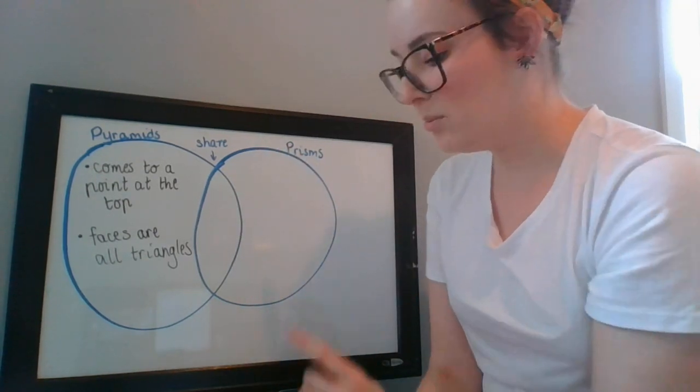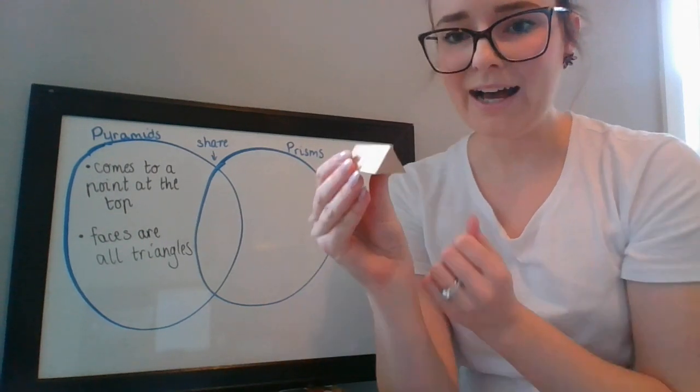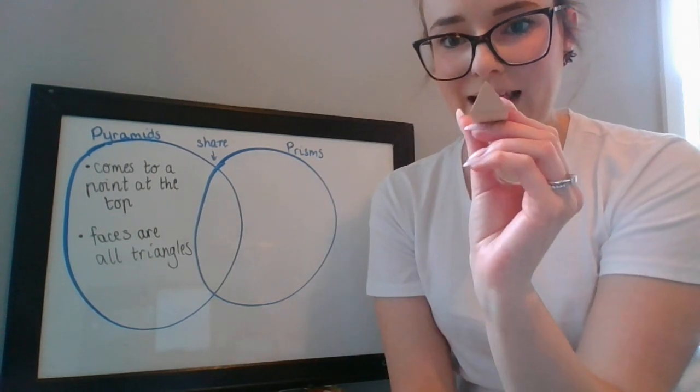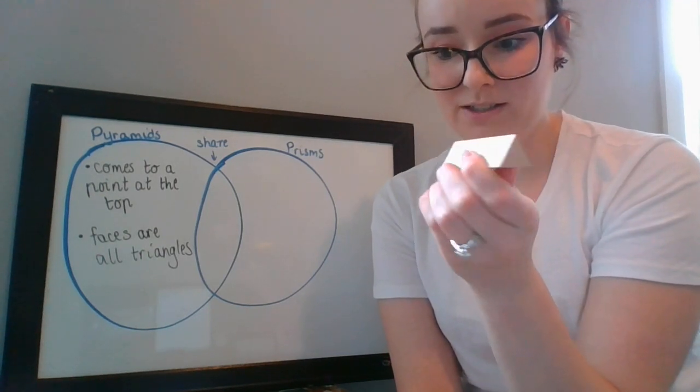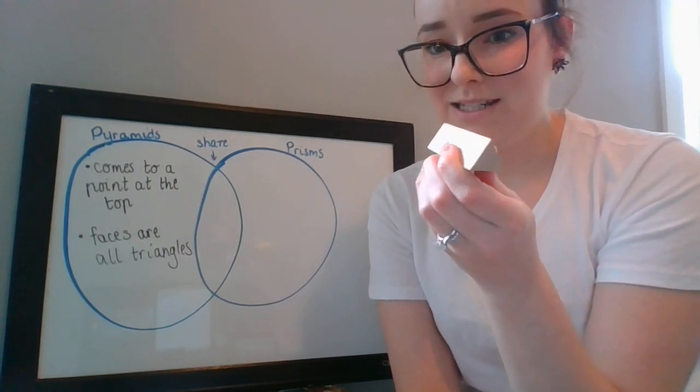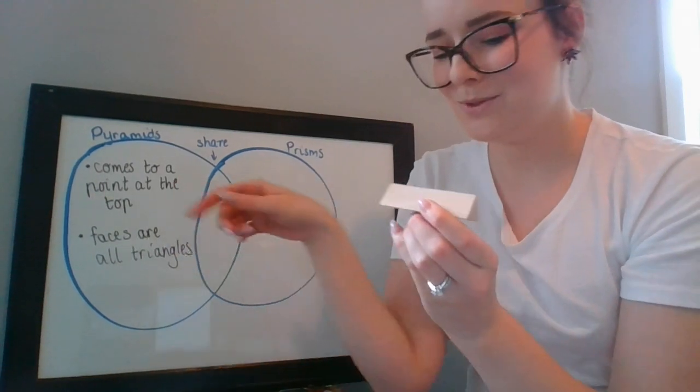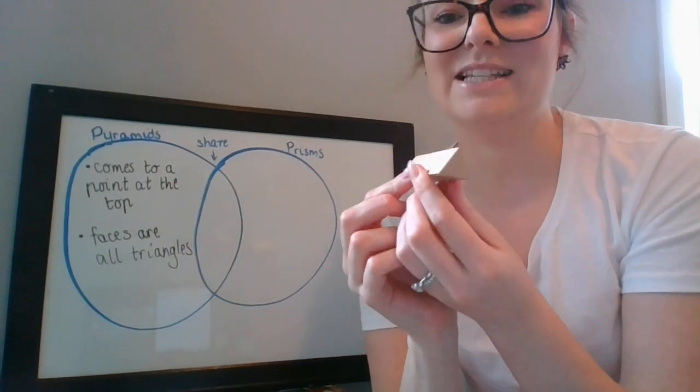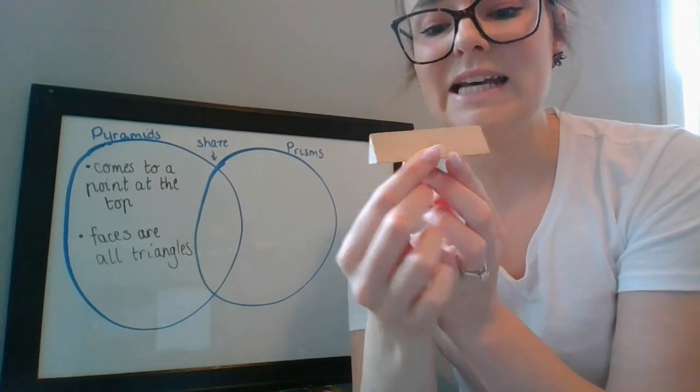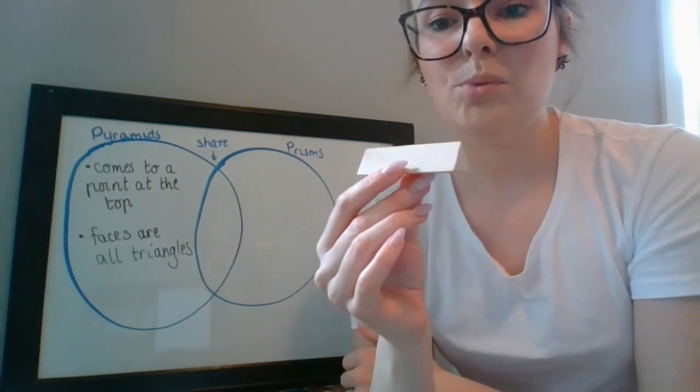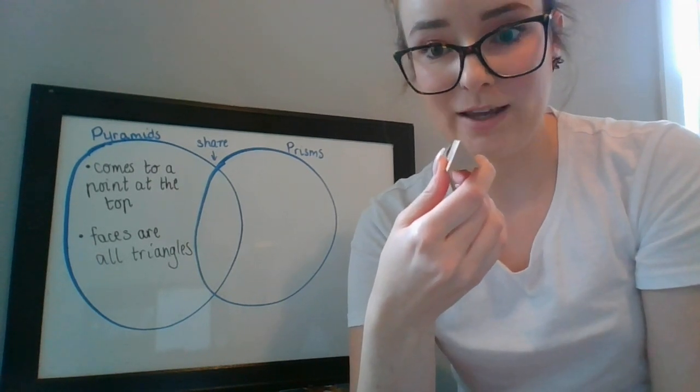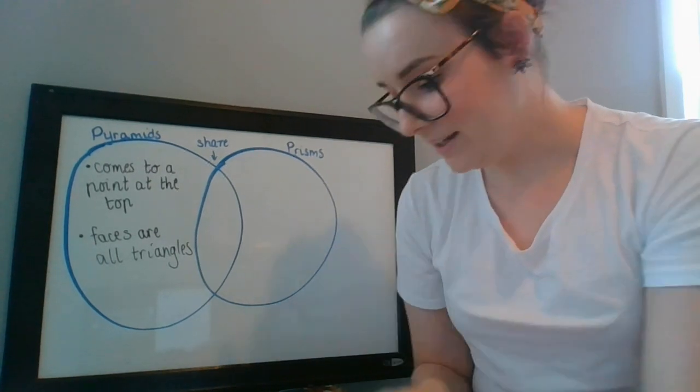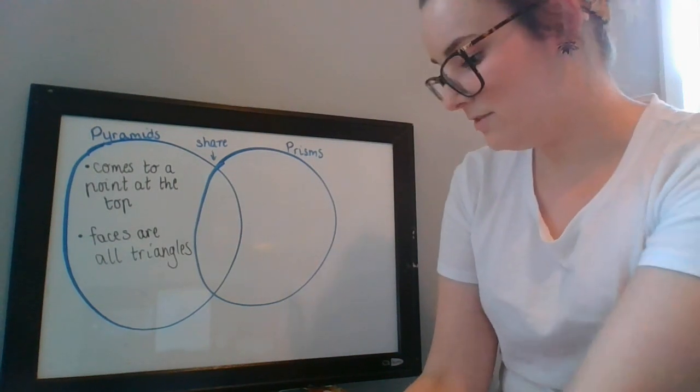Let's move on to our prisms. How do we know that this is a prism and not a pyramid? Okay, you might like to be sneaky and say it doesn't come up to a point but there's definitely more things than that. Yesterday we said that all prisms have two ends that are the same 2D shape. So I could probably pop that in underneath my prisms information.